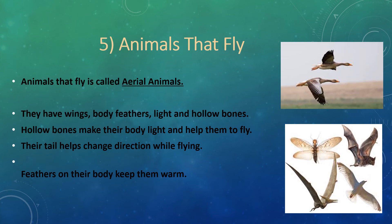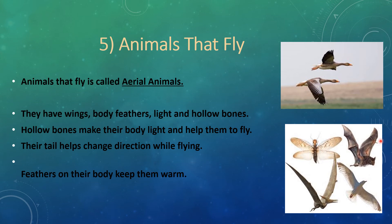The last category is animals that fly, called aerial animals. They have a unique body structure such as wings, body feathers, and light and hollow bones. These hollow bones make their body light and help them to fly. Their tail helps in changing direction while flying. All birds have feathers on their body to keep them warm. The bat is not a bird but a mammal. Bat wings have no feathers — they are made of a thin layer of skin stretched across the arms and fingers like an umbrella, with very long fingers to help it fly.